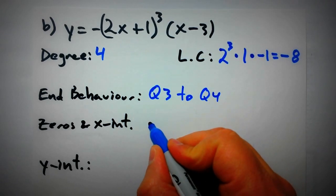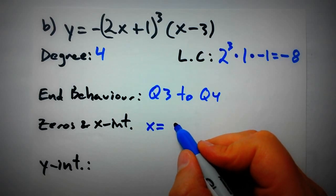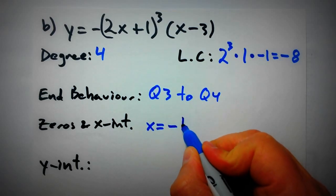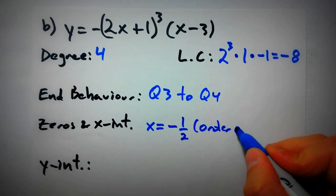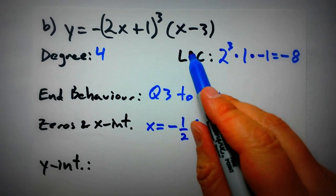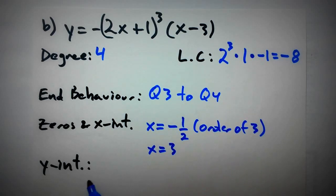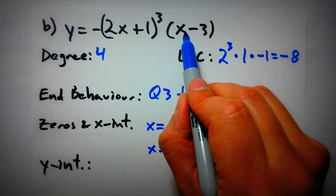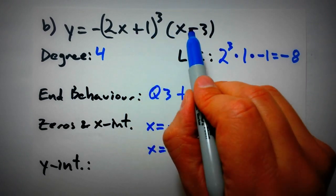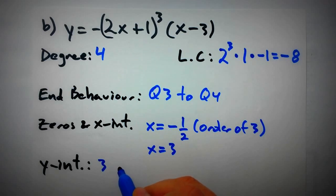Let's find the zeros. Solving 2x plus 1 equals 0 gives x equals negative 1/2, with an order of 3. The other x-intercept is x equals positive 3. For the y-intercept, let x equal 0: we get 1 cubed times negative 3, multiplied by the outer negative, giving positive 3. So the y-intercept is (0, 3).